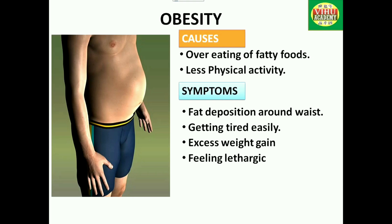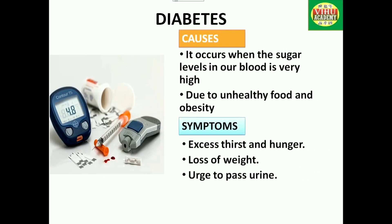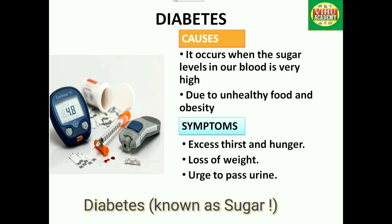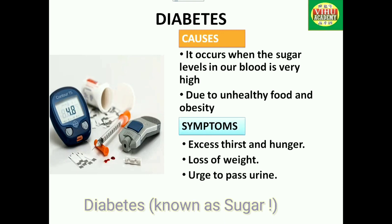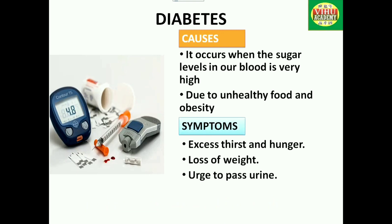Now let's move to diabetes. Diabetes is a most common lifestyle disease. It occurs when our body's blood sugar level, known as glucose, is high. Unhealthy food, obesity, and lack of exercise cause diabetes.